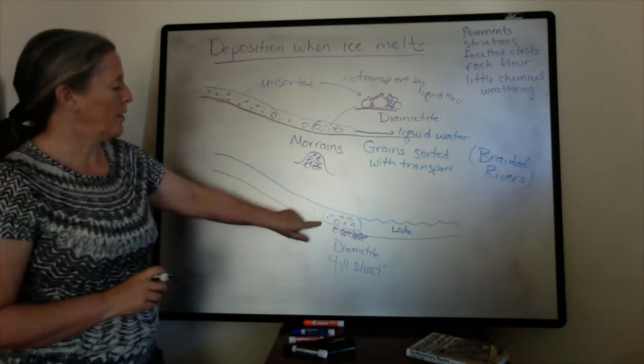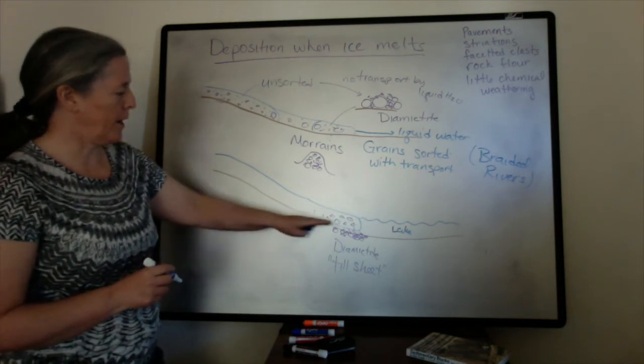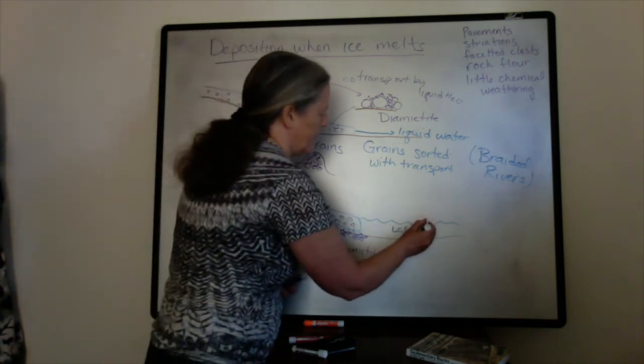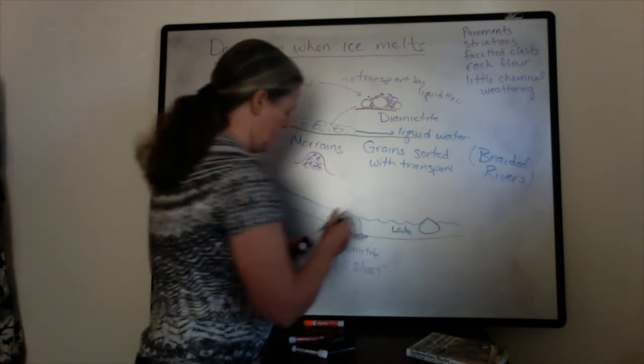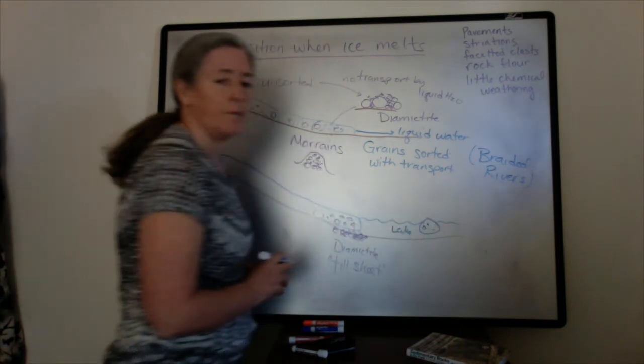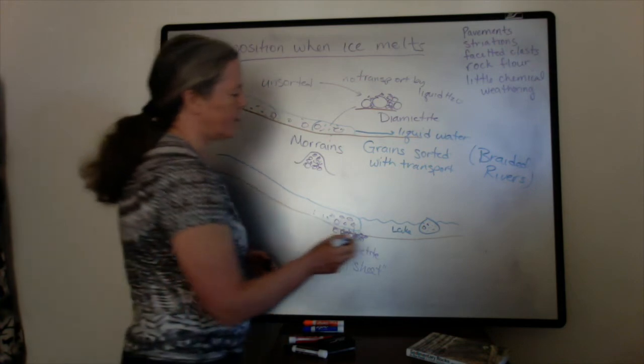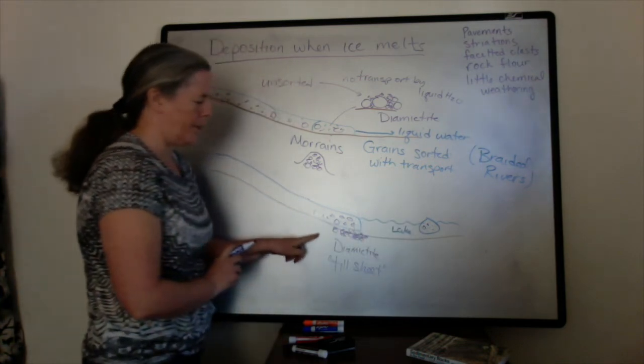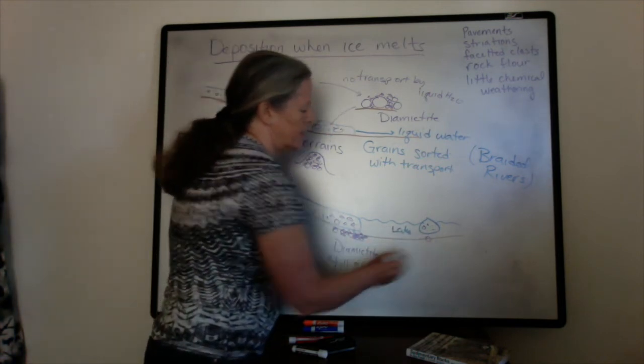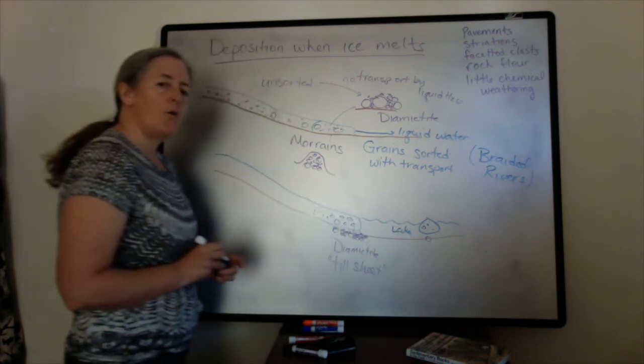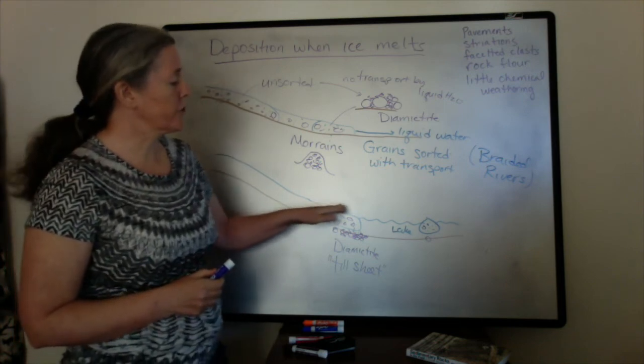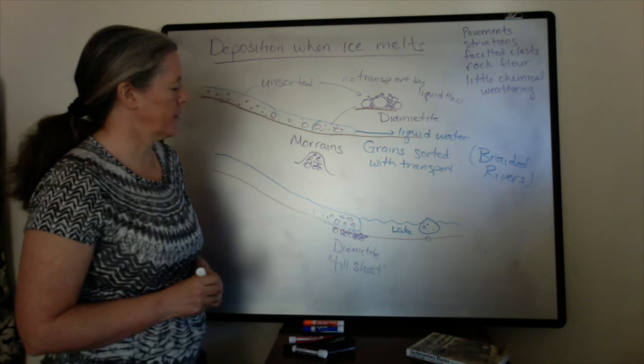So one of the things that happens when the ice goes into the lake is it often produces icebergs. And those icebergs can transport sediment from the glacier out into the middle of the lake. And in general it's the same thing that happens when you form the till sheet here. The stones from this just drop to the bottom of the lake. Now normally the flow speed in a lake is very, very low.